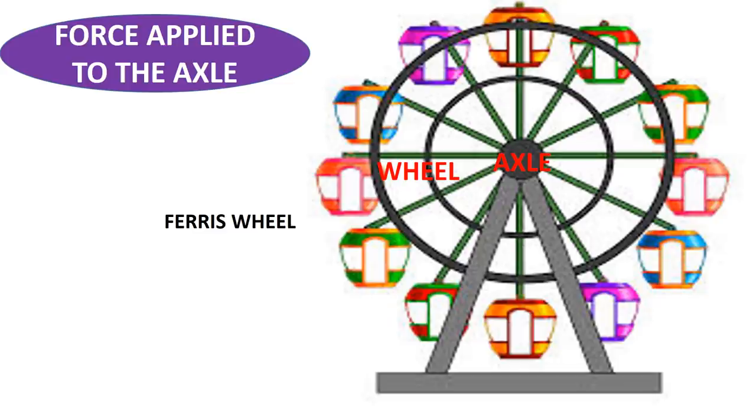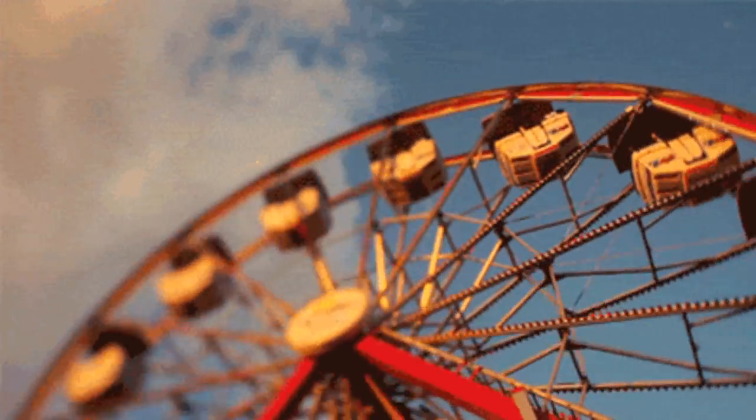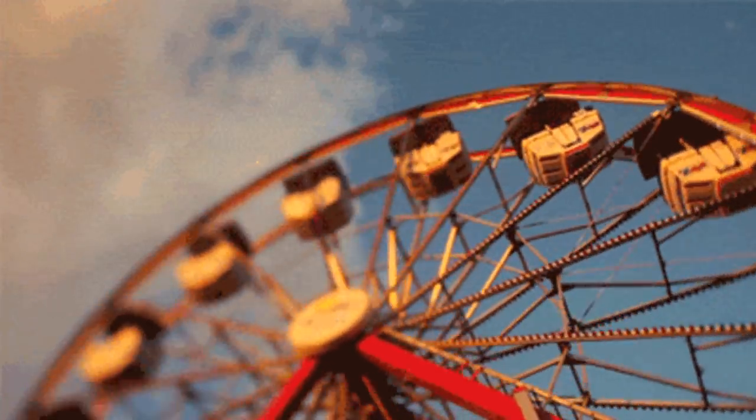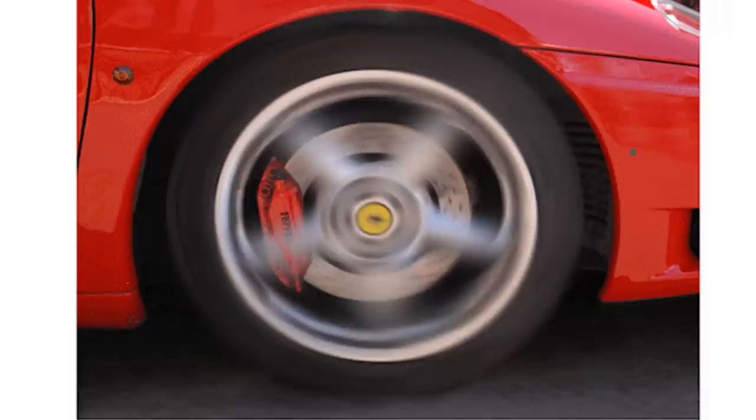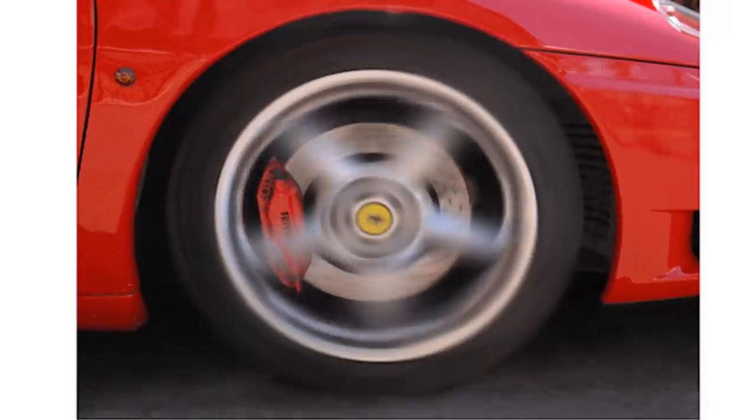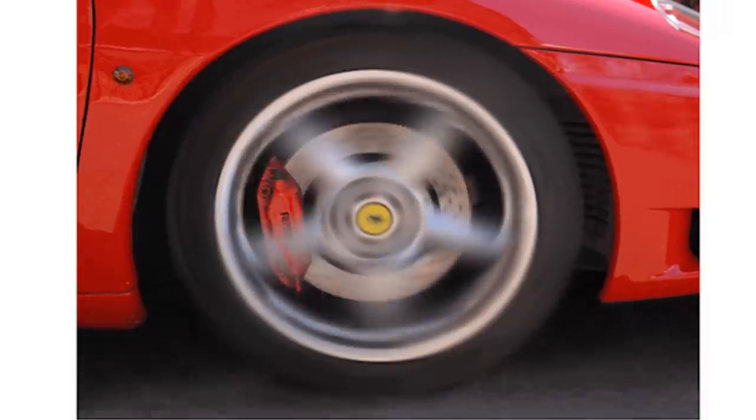Force applied to axle: A ferris wheel is an example of force being applied to the axle. When the axle turns, it results in the giant wheel turning. A ceiling fan works the same way. Anything that moves in a circle, there is most likely a wheel and axle involved.